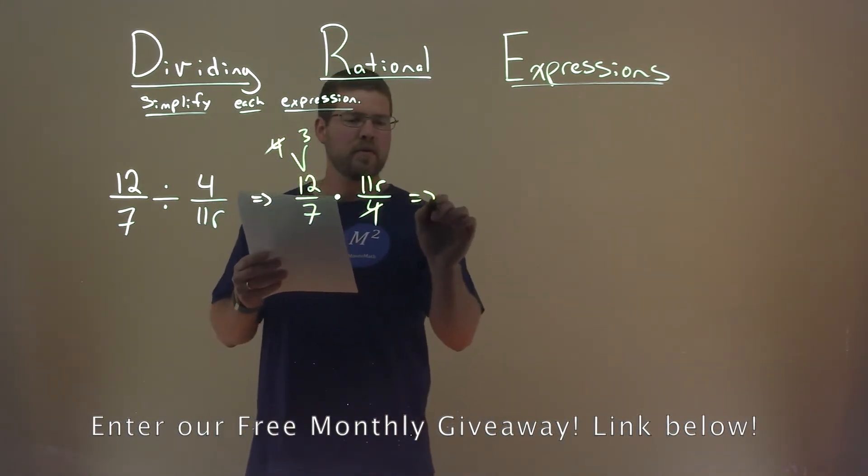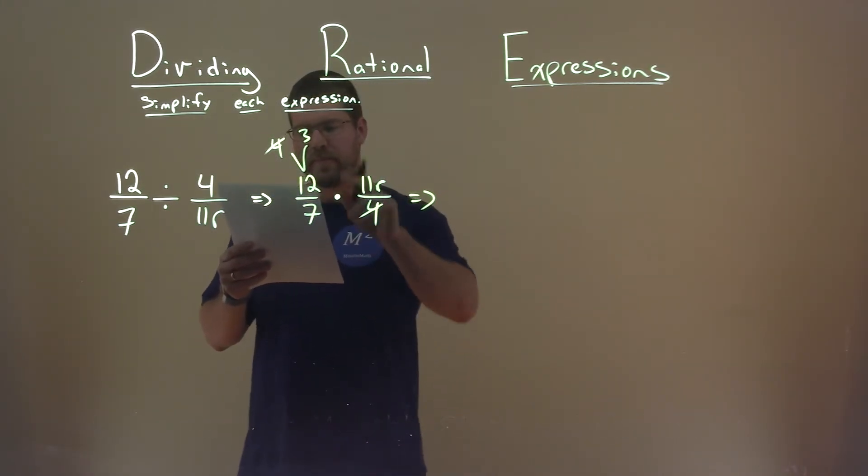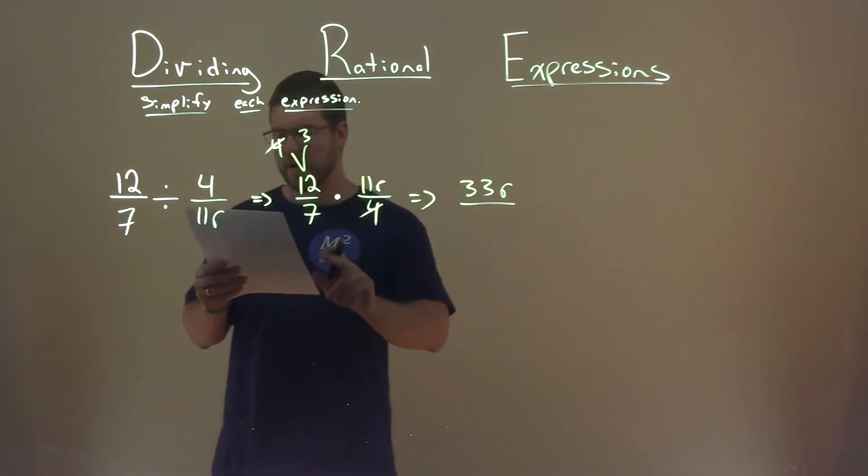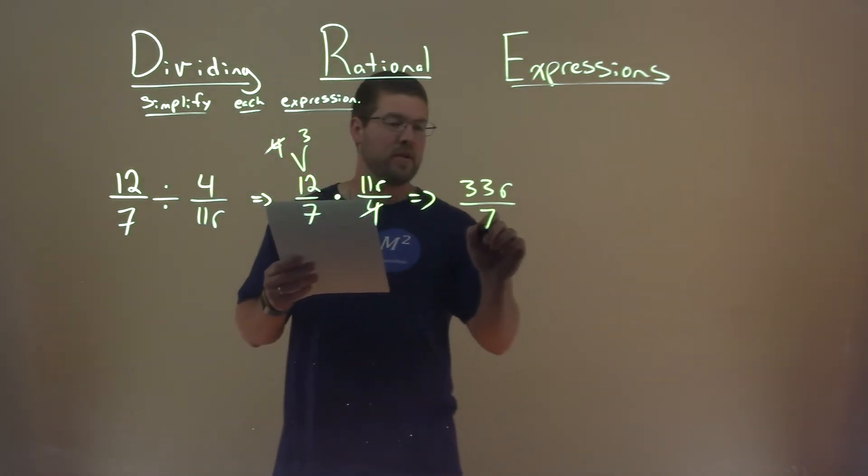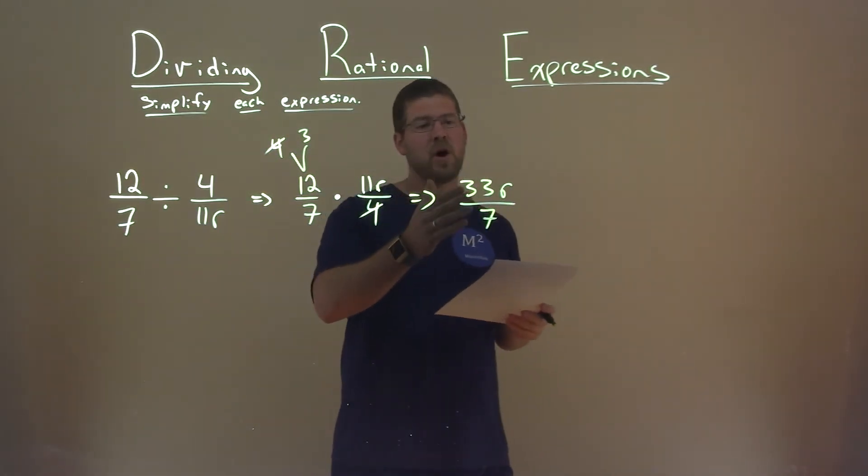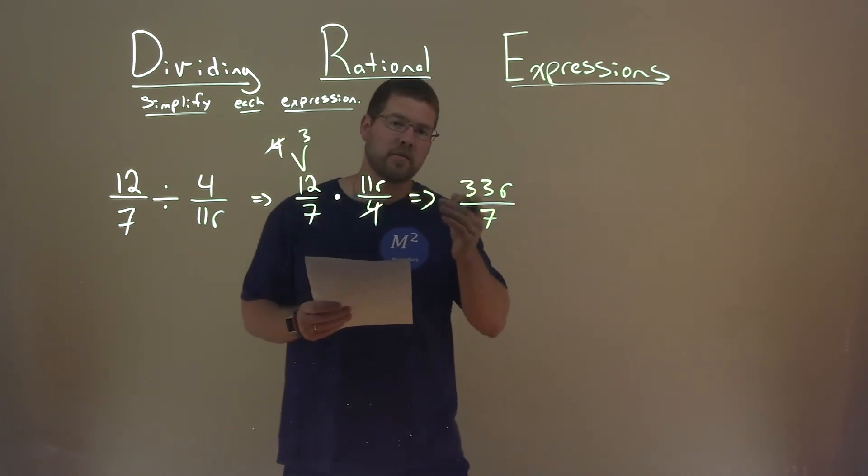So what we're going to do then is multiply across the numerator. 3 times 11 is 33, don't forget that r, over our denominator, which 7 is the only thing left over. We have a 7 here. And so that's it. 33r divided by 7 is our final answer.